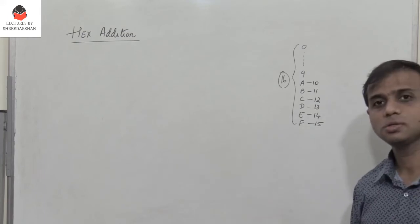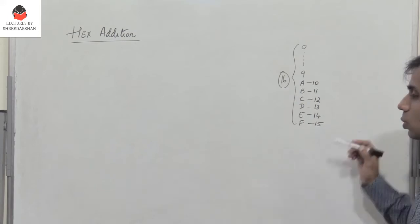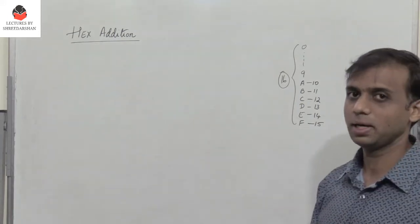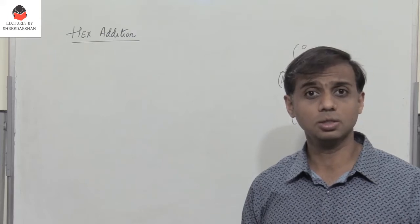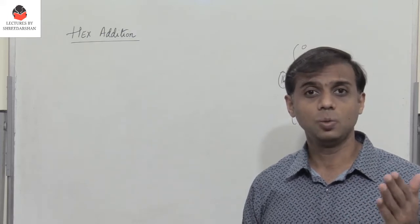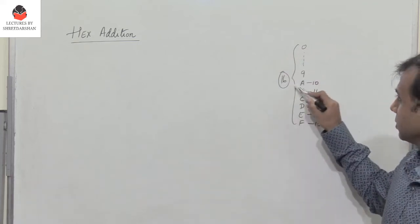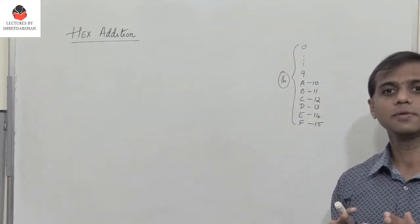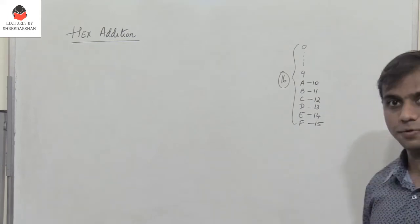During the process of addition, if the number becomes greater than 15, we have to convert it to hex format by dividing the given number by 16. Just like in octal, if the number was greater than 7, we divided it by 8 to get the octal representation. Here, since the base is 16, we have to divide the given number by 16 if the number is greater than 15.